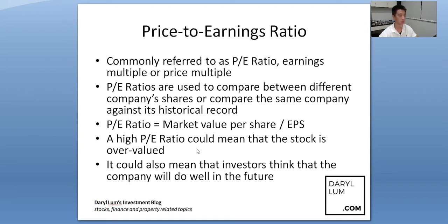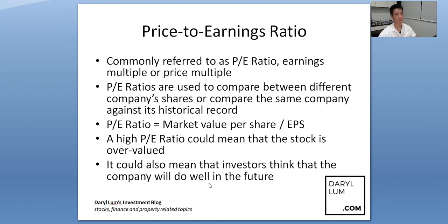A high PE ratio could mean that a stock is overvalued — if market value per share is very high but earnings per share is very low, you get a large PE ratio (big number divided by small number). However, it could also mean that investors think the company will do well in the future. It doesn't mean a high PE ratio automatically means you can't buy — in fact, growth stocks normally have quite high PE ratios.